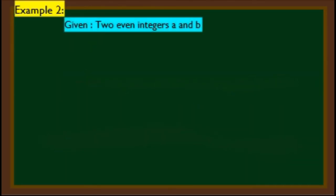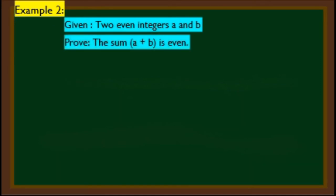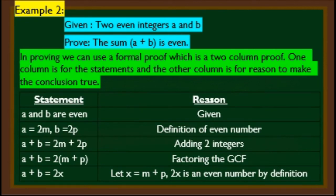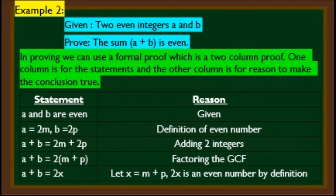Example 2: given two even integers A and B, prove that the sum A + B is even. We use a formal two-column proof — one column for statements and one for reasons. Statement: A and B are even (reason: given). A = 2M, B = 2P (reason: definition of even numbers). A + B = 2M + 2P (reason: adding two integers). A + B = 2(M + P) (reason: factoring the GCF). Let X = M + P; then A + B = 2X, which is an even number by definition.